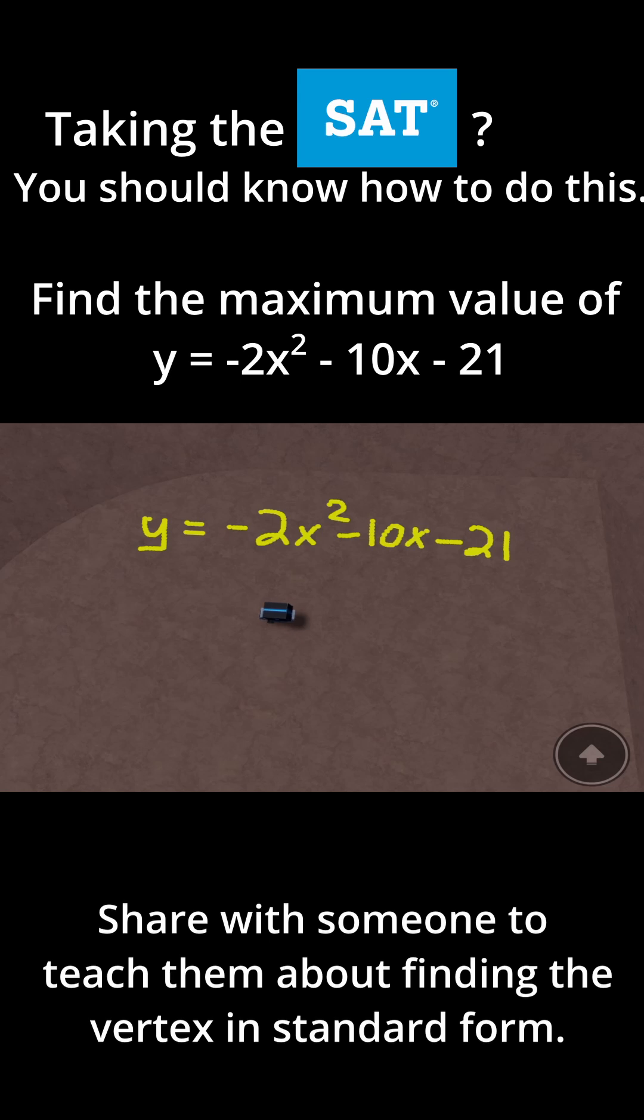This problem says find the maximum value of the equation y equals -2x² - 10x - 21. What does that mean? How do you find the maximum value of this equation? Let's think about that for a minute.